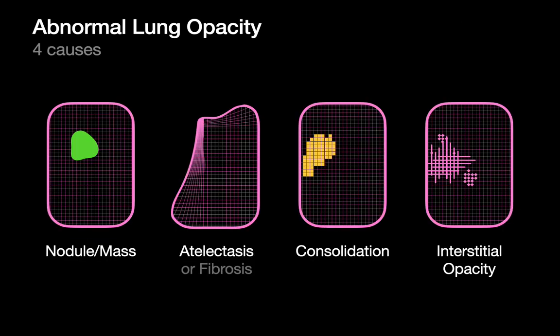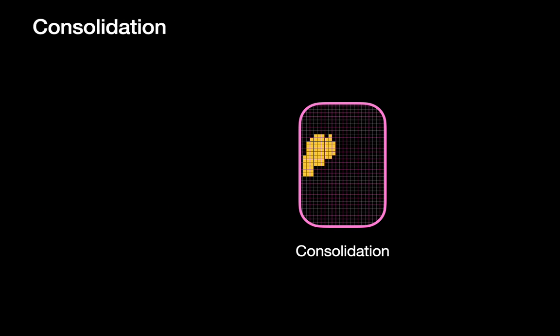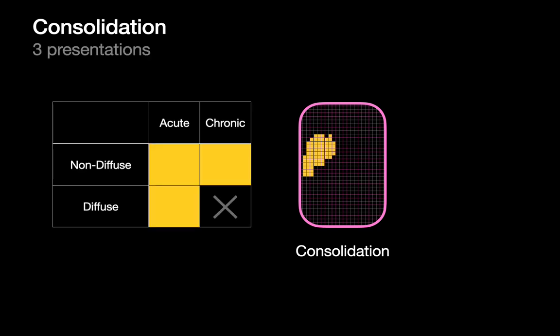There are four major reasons why you could encounter an abnormal opacity in the lung. In this talk we're going to begin a discussion of consolidation. When it comes to interpreting consolidation on imaging, one way to handle it is to divide it according to chronicity and distribution — acute versus chronic in terms of chronicity, and non-diffuse versus diffuse in terms of distribution.